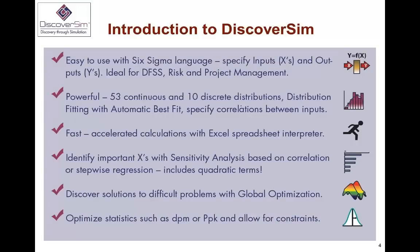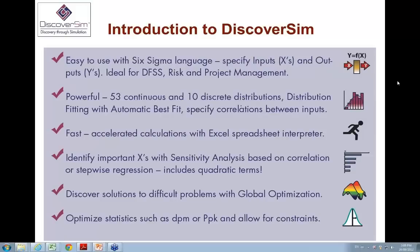DiscoverSim is a new product by Sigma XL. We've made effort to tailor it to the Six Sigma audience, using terms like input distributions, input controls, and output responses rather than assumptions, forecasts, and decision variables. We have a large library of 53 continuous distributions and 10 discrete distributions with automatic best fit. You can specify correlations between inputs. It's fast — we have an Excel spreadsheet interpreter that uses Gauss, a matrix language. We export the Excel model into Gauss, do the number crunching there, and bring results back into Excel, resulting in speed increases up to 40-fold.